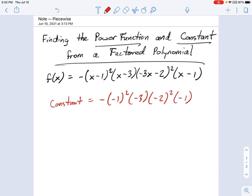Now that's not so bad. We just have to work through all these terms. We have negative, negative 1 squared is just 1 times negative 3, negative 2 squared is 4 times negative 1. So I count 3 negative signs, that means this is going to be negative. 1 times 3 is 3 times 4 is 12. So we have -12. That's our constant term. That really was pretty quick. You just multiply all the numbers together in the factored form.